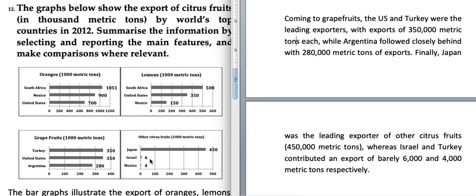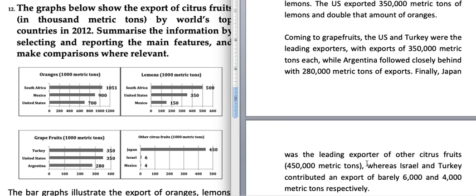Finally, Japan was the leading exporter of other citrus fruits with 450,000 metric tons, whereas Israel and Turkey contributed an export of barely 6,000 and 4,000 metric tons respectively. I have used these figures in brackets so that without the data in brackets, the sentence still feels complete — that is how you check whether you have used brackets correctly.